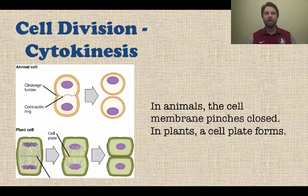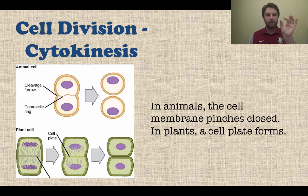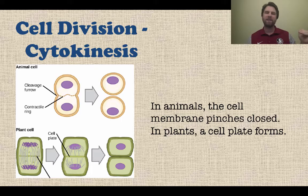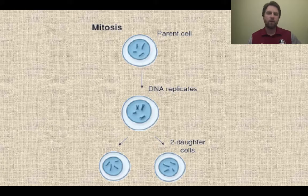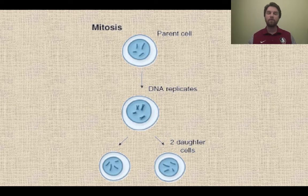Finally, we have to divide the cytoplasm. We've divided the nucleus, now we can divide the cytoplasm with cytokinesis. In animal cells, the cell membrane is going to pinch closed until it breaks off and you have two new daughter cells. In the plant cell, there's actually going to be something called a cell plate that forms and separates the two. So here's an overview of what we saw in mitosis: you have a parent cell with, in this case, four chromosomes. The DNA is going to replicate, so you double it — you see the sister chromatids there — and then at the very end you're going to have two daughter cells with identical chromosomes to the parent cell.